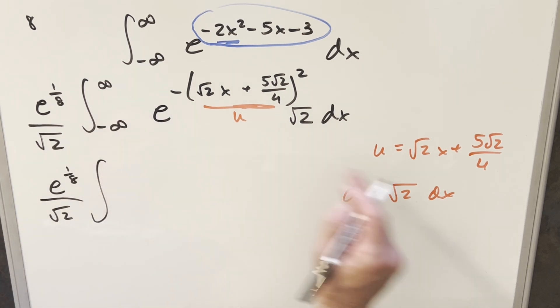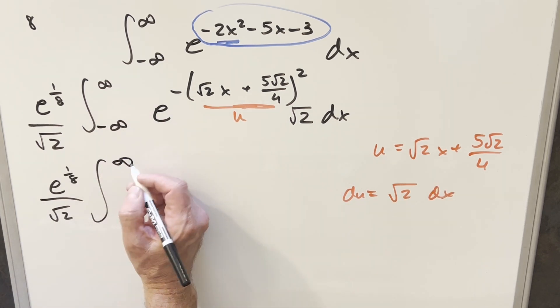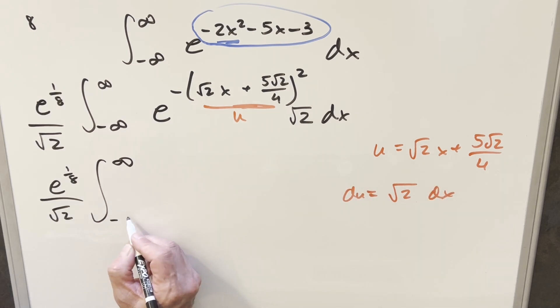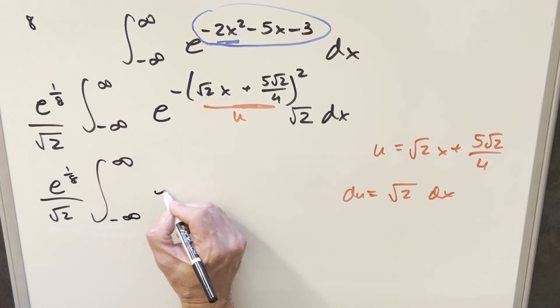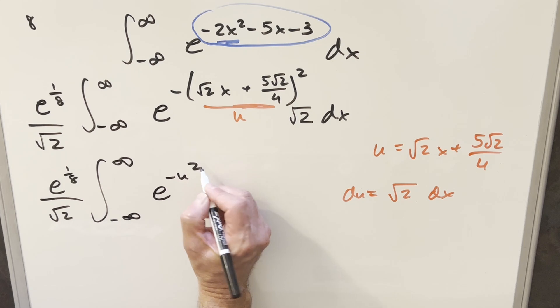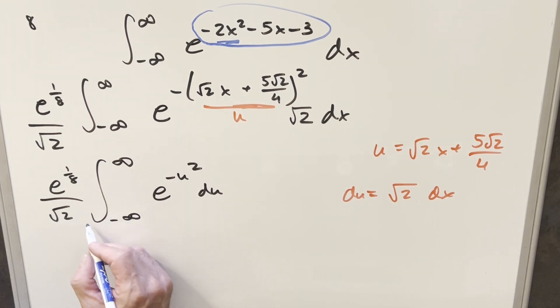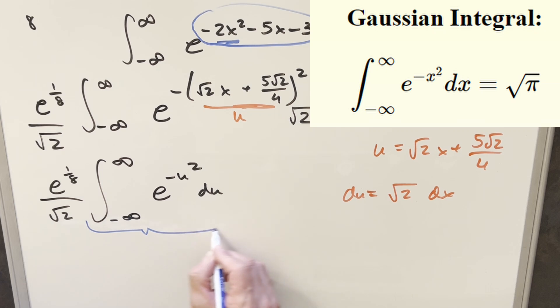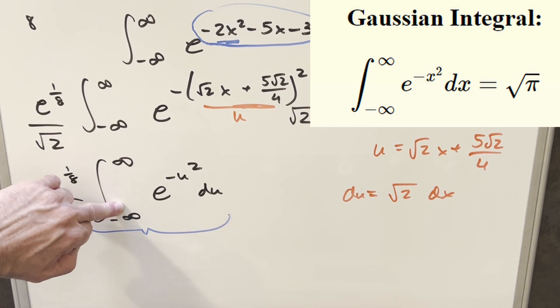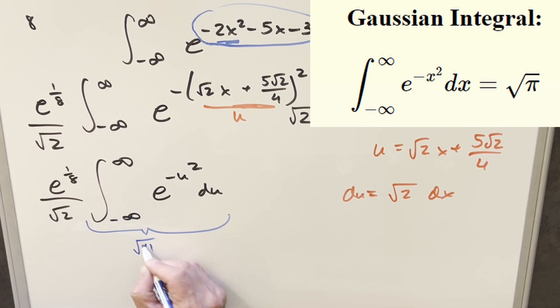first update the bounds. So you plug infinity in here, it's still infinity. You plug minus infinity, that's still minus infinity. This here becomes e minus u squared, and everything else is just du. But then this is exactly our Gaussian integral right here, so we have a known value for this, and we have the full Gaussian integral for minus infinity to infinity, so this is going to be square root of pi.